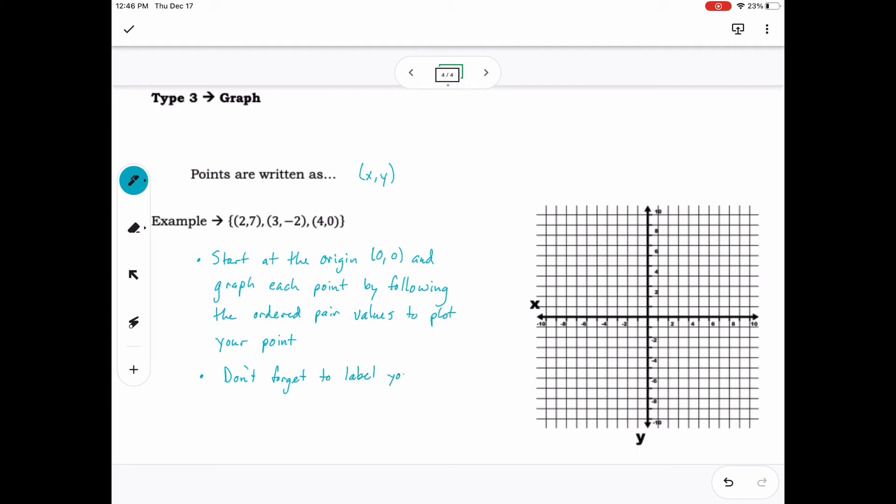So the first point we'll graph is 2, 7. 2 is our x value, so starting at the origin, we go right 2 units along the x-axis. Then, 7 is our y value, so from where we left off on the x-axis, we will go up 7 in regards to the y-axis. We will plot a point where we are at and then label it.